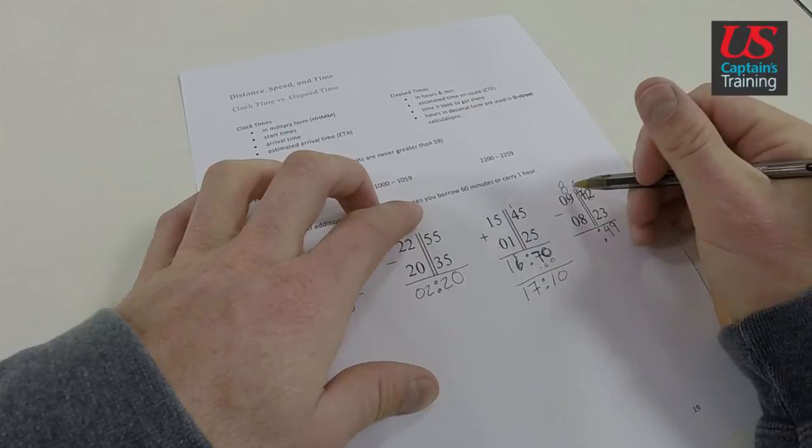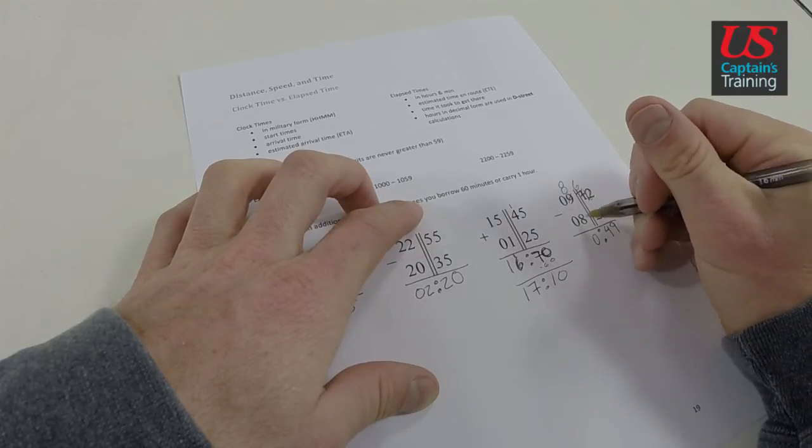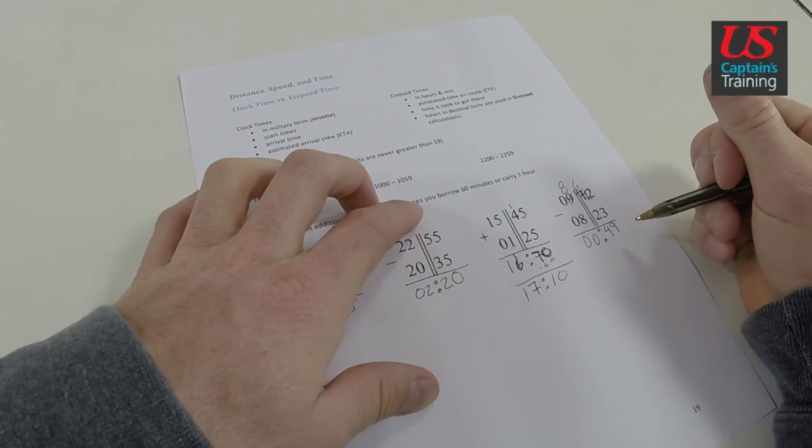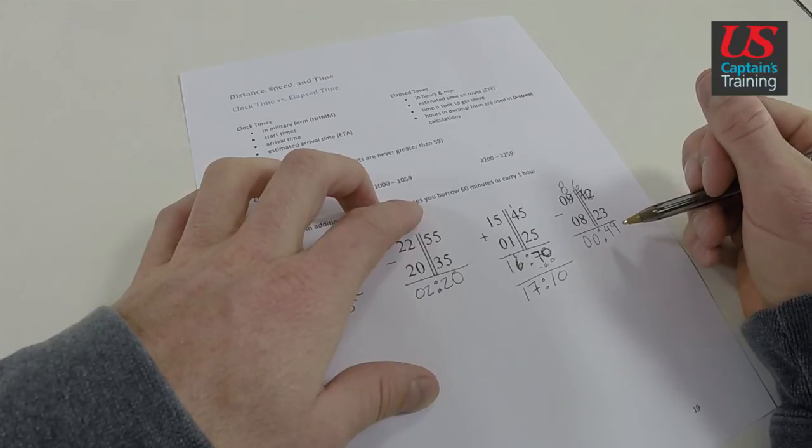It's colon. And now 8 minus 8 is 0. 0 minus 0 is 0. So we came up with the same thing we did with our mental math.